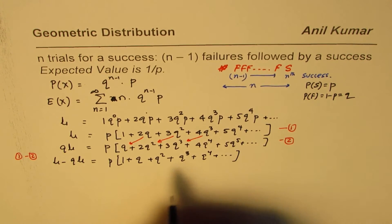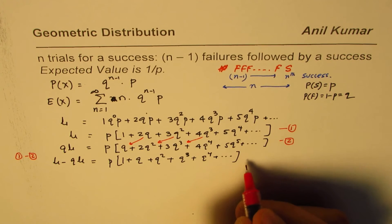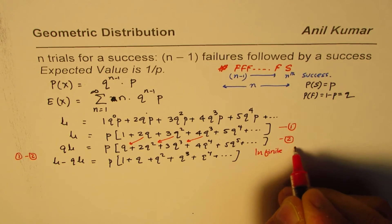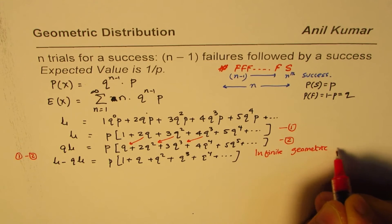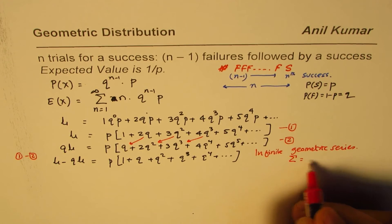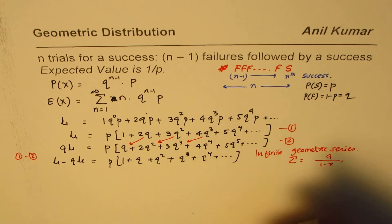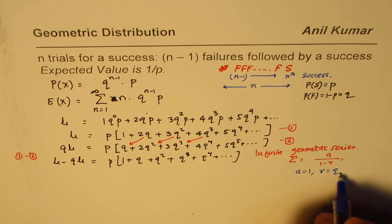So we get a series like this. That is an infinite geometric series, whose sum is a over 1 minus r. In our case, a equals 1 and r equals Q.